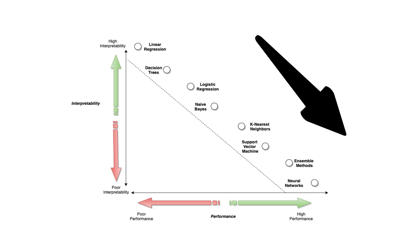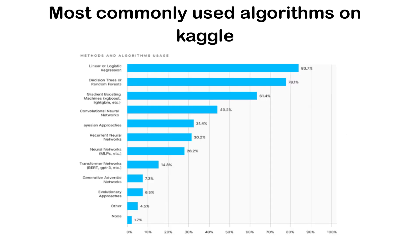Often you'll find that simple models with good feature engineering outperform complex architectures. Remember, many famous Kaggle competitions have been won with well-tuned gradient boosting models rather than deep neural networks. The key is usually in feature engineering and deep problem understanding, not model complexity.